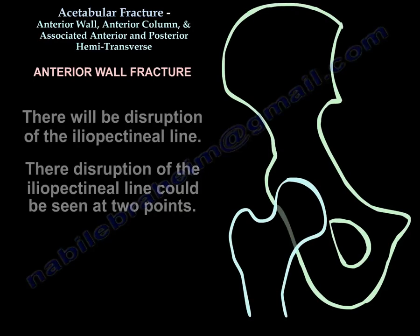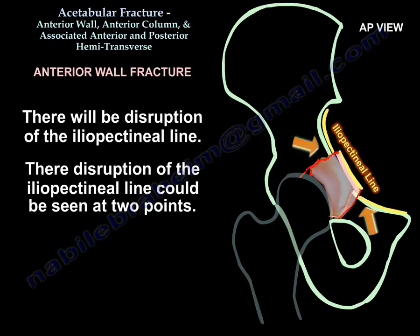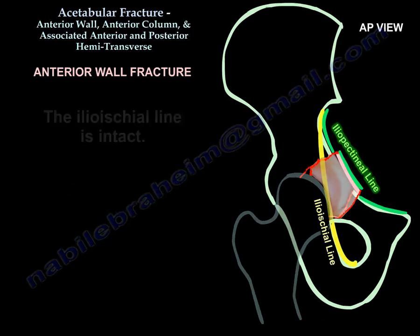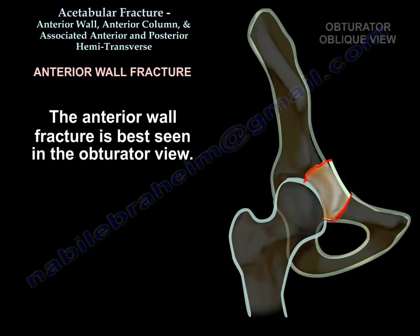There will be disruption of the iliopectineal line, and this disruption could be seen at two points. In anterior wall fracture, the iliopectineal line is intact. The anterior wall fracture is best seen in the obturator view.